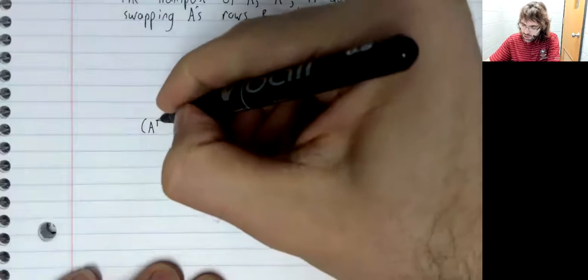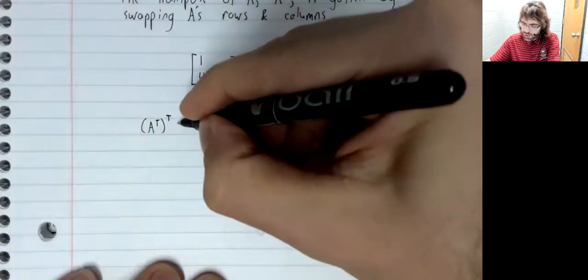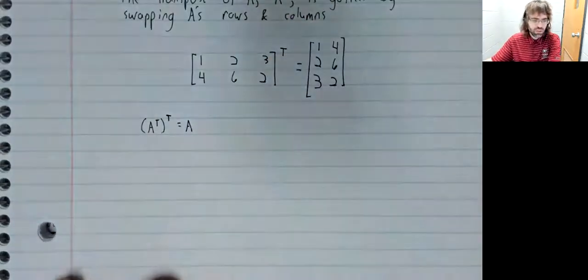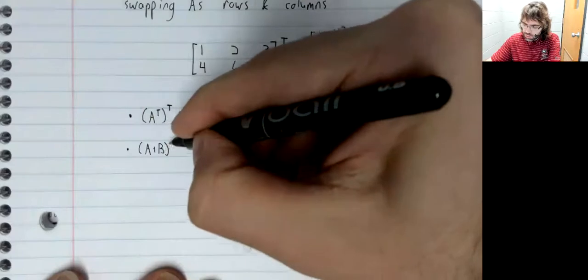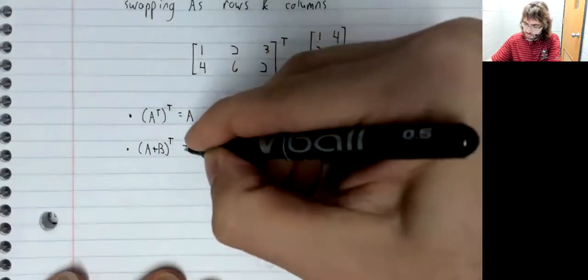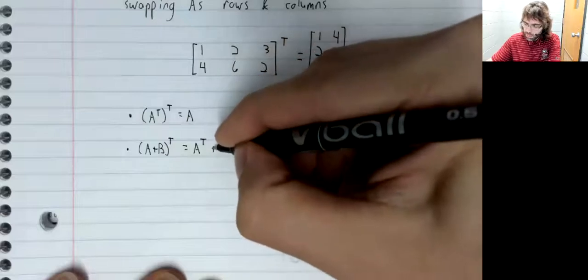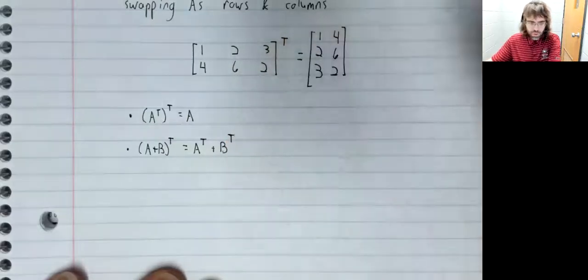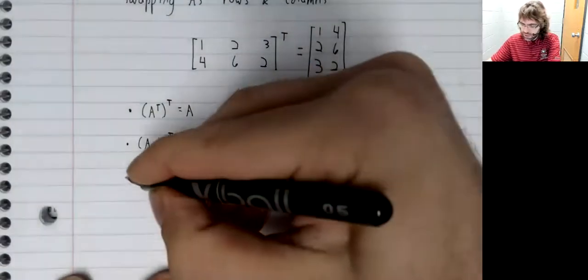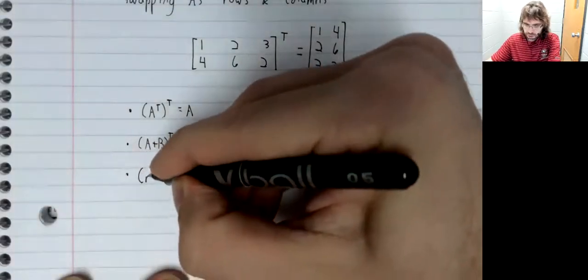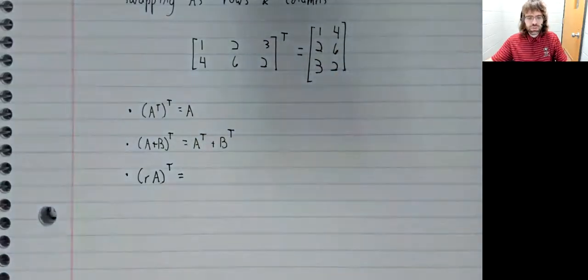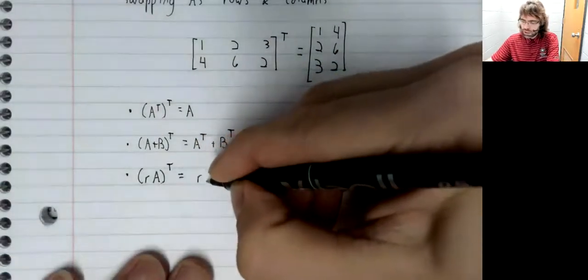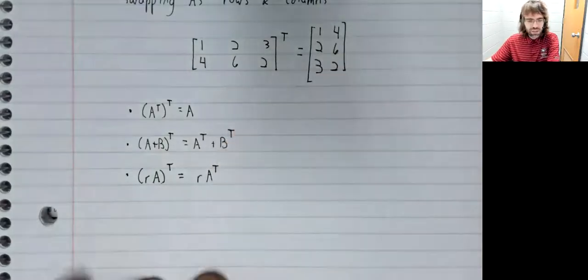The transpose of A transpose is just the original matrix. The transpose of A plus B is the sum of the transposes. If we've got a scalar inside a transpose, we can pull that scalar right out.